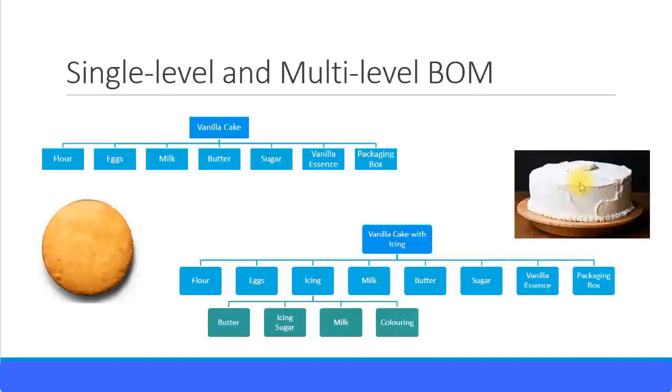Now imagine I want to have some decorations—for example, some flowers, leaves, or figures. Those have to be created separately, so that can be another level, like a decorations level. If you have more than one level, it's called a multi-level BOM. If you just have one level, it's called a single-level BOM. Very easy to remember the different types of BOMs.